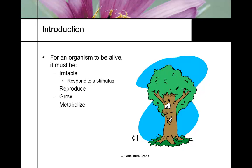Starting at the most basic definition — what does it take for an organism to actually be alive? There are lots of definitions of life, but the best definition is that for an organism to be alive, it must be irritable, meaning it responds to a stimulus.